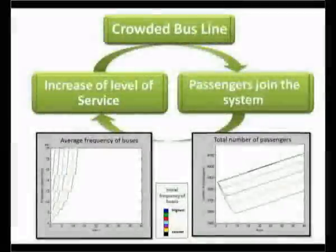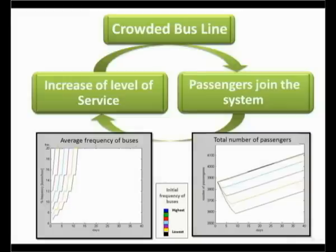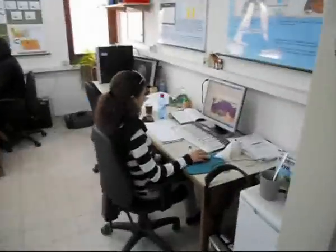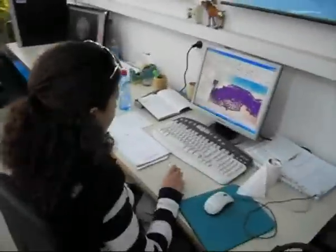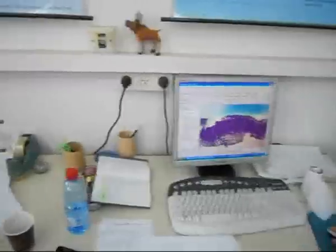Meanwhile, in the initially crowded bus line, an opposite phenomenon occurs: the growing number of buses increases the level of service and causes even more people to use the bus line. In the laboratory of geosimulations and spatial analysis, geography and environmental students are working to model phenomena like this.